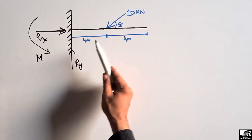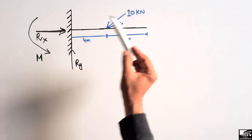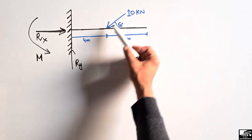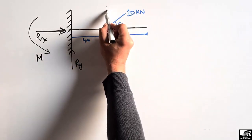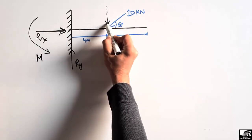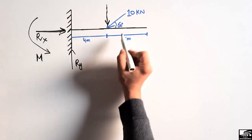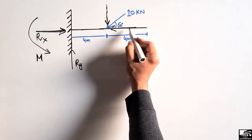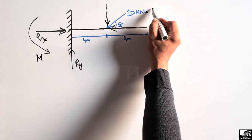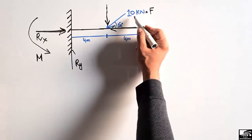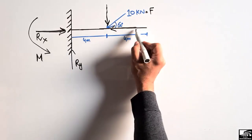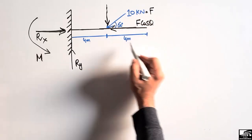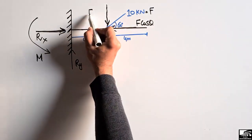Since this is an inclined load, we have to resolve it into two components. One component will be the vertical component and there will also be a horizontal component. If the inclined load acting on the beam is F, the horizontal component will be F·cos(θ), while the vertical component will be F·sin(θ).